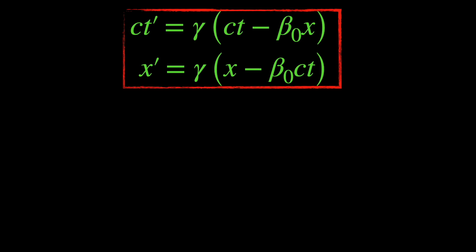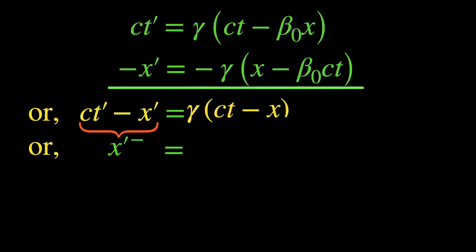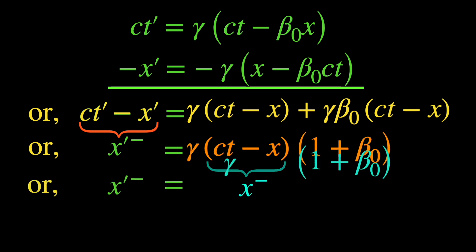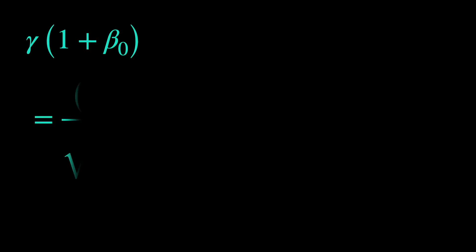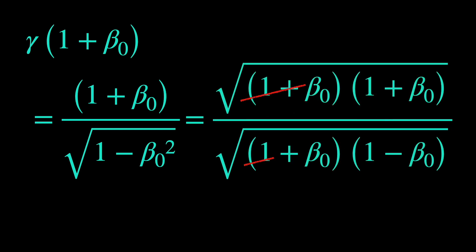To get the Lorentz transformation equations among the primed and unprimed light cone coordinates, just subtract the equation for x from the one for ct. The left hand side is just ct prime minus x prime, so x minus prime itself. On the right hand side, collect the ct minus x combination and factor it out along with the common constant Lorentz factor. That leaves us with 1 plus beta 0 inside. Replace the ct minus x with x minus. Now the factor gamma times 1 plus beta 0 can be simplified easily since gamma is again 1 upon square root of 1 minus beta 0 squared, which can be factored into 1 plus beta 0 and 1 minus beta 0 under the square root.